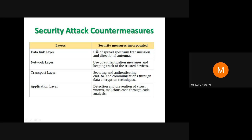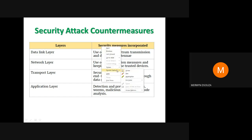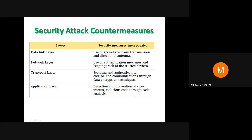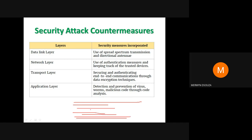Normally when transmission happens, it happens over a narrow band of frequency. In military applications and for secure communication, using some special kind of coding, they spread the frequency over a larger area so the same data is transmitted over a wider range. That is spread spectrum in simple words — we don't need to go into the details.